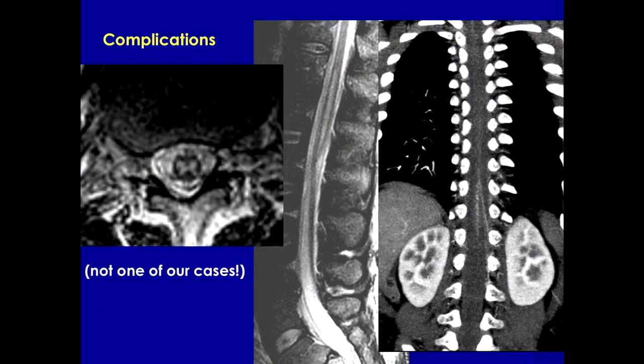Here's another example of a CTA showing you the artery of Adamkiewicz coming in — in this case below L1 — coming up and forming this characteristic loop, and our injection is going to be right around this area. So we want to stay lateral, and we want to also be very cautious about injecting patients in this upper lumbar, lower thoracic level.